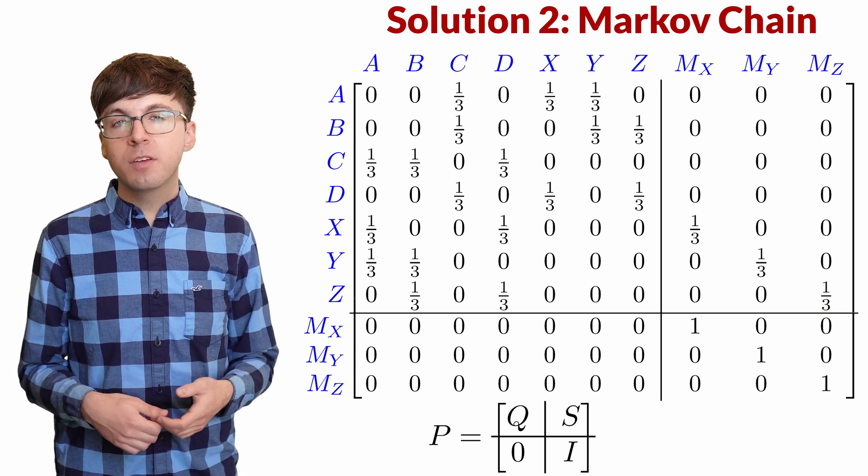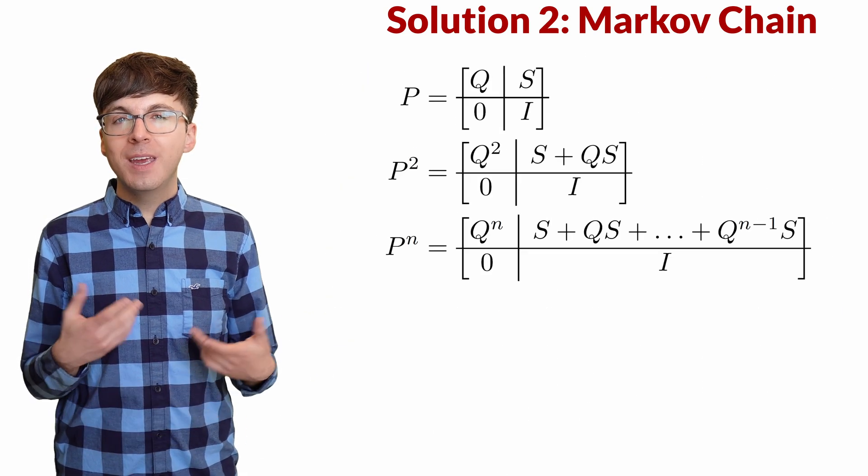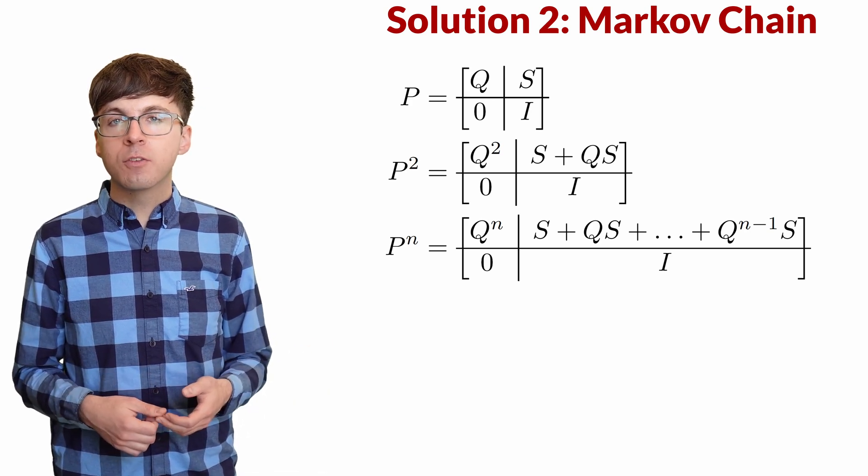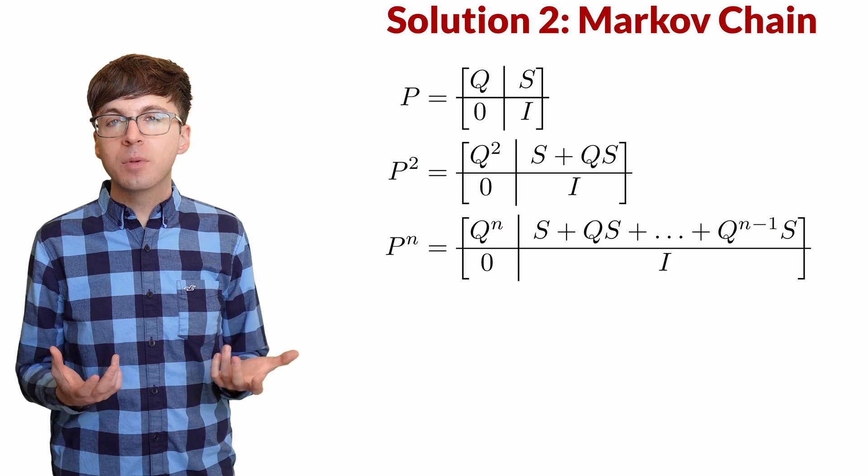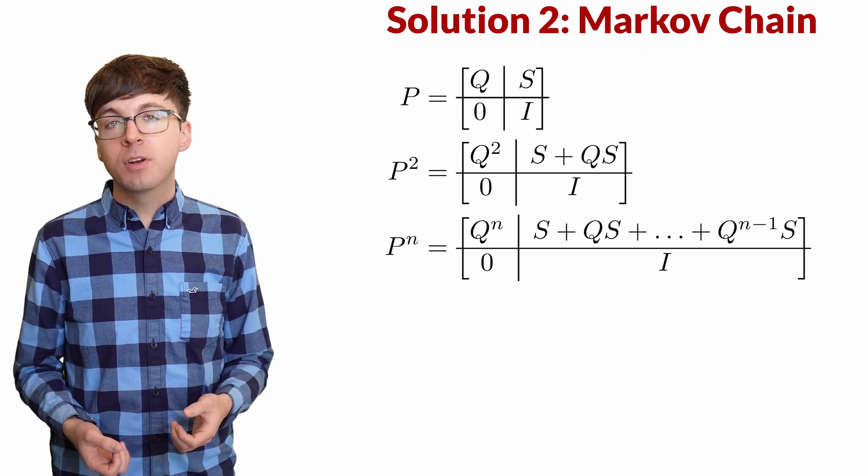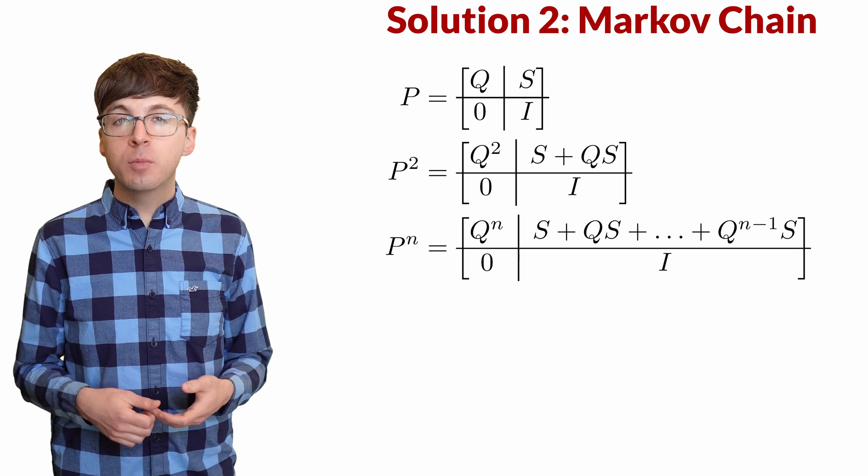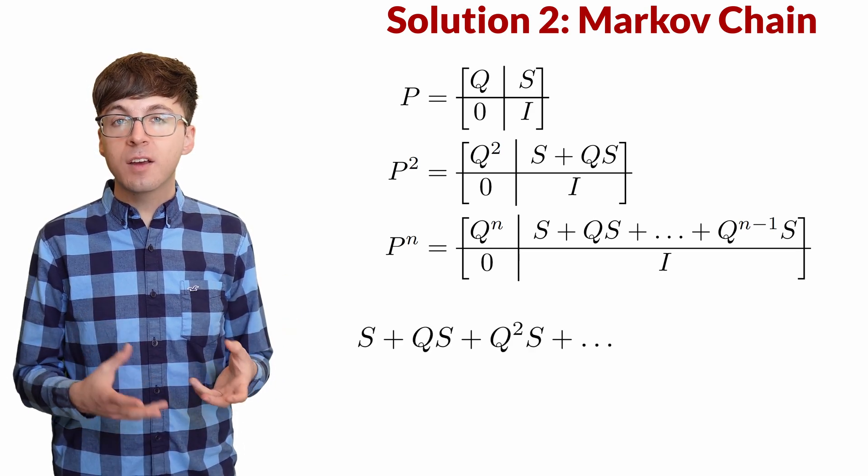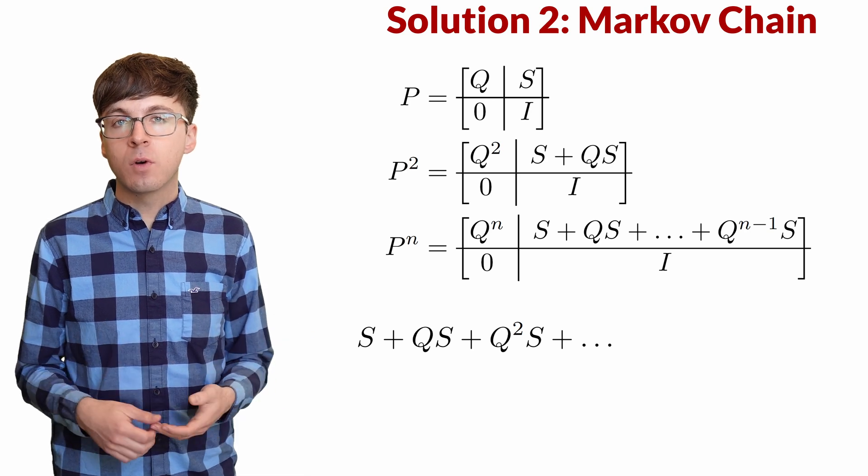It turns out when we multiply the transition matrix by itself, we get this nice pattern. You can give it a try if you know matrix multiplication. What we care about is what happens to the upper right block of the matrix in the limit. The probability of each person eventually feeding the monster. This is S plus QS plus Q squared S, and so on. This is just like a geometric series, but with matrices.